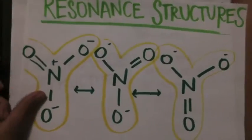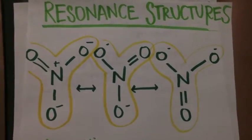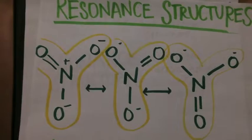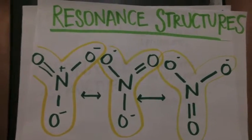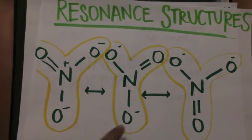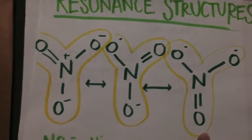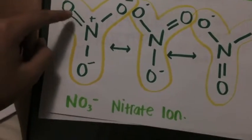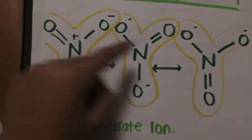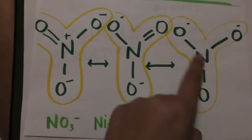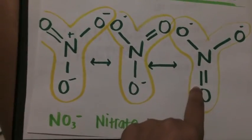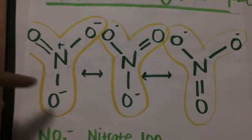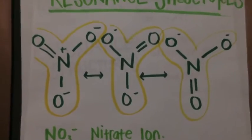This is an example of a resonance structure. NO3, a nitrate ion, has three different resonance structures. You can see that the double bond changes position in each of the structures. The molecular formula remains the same.